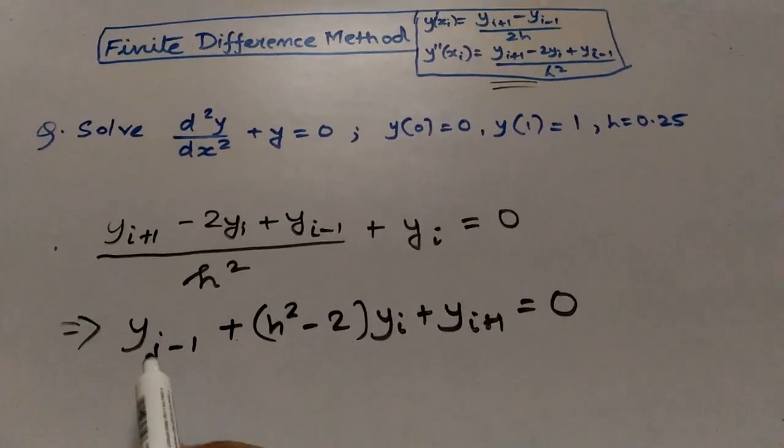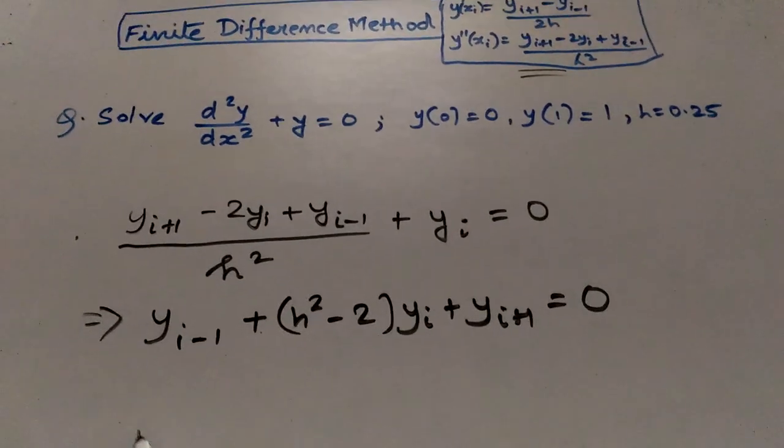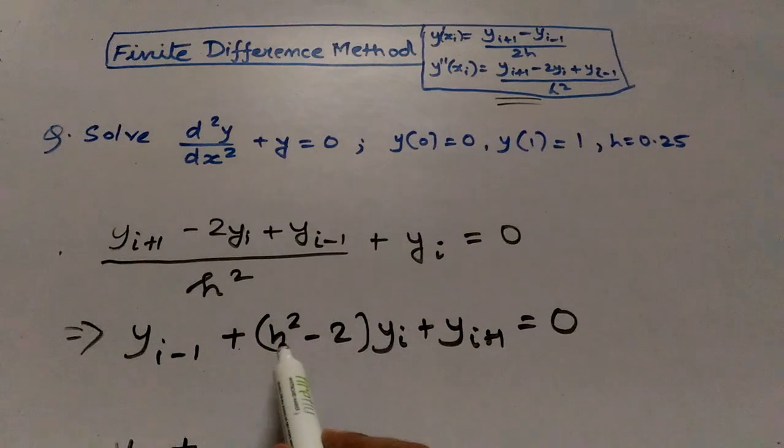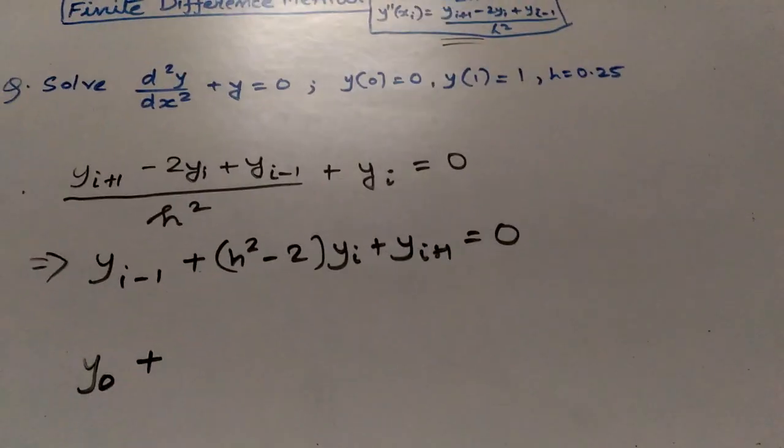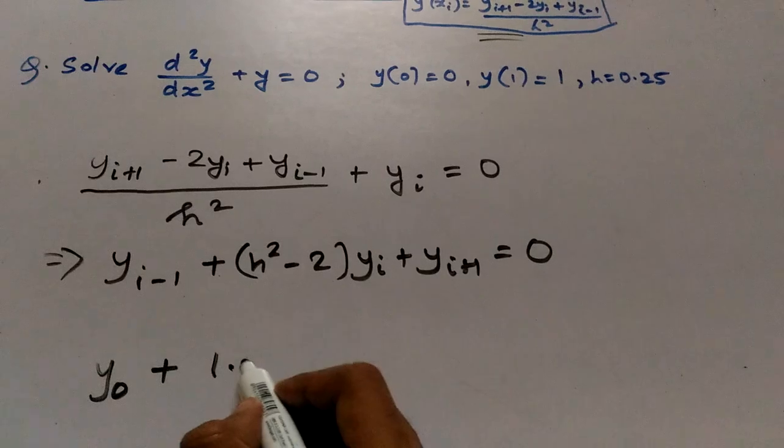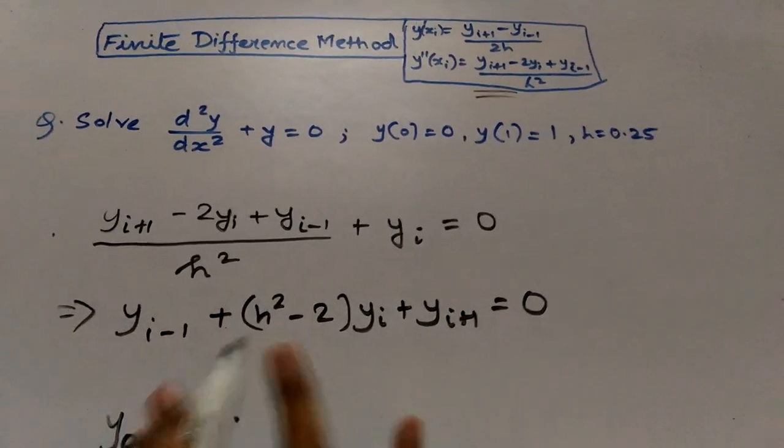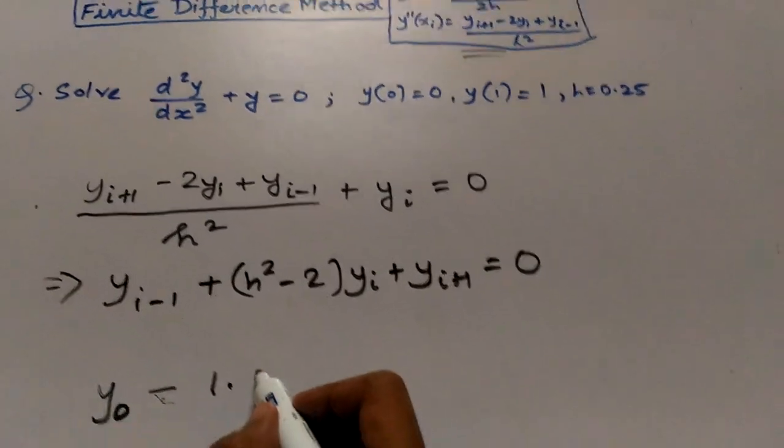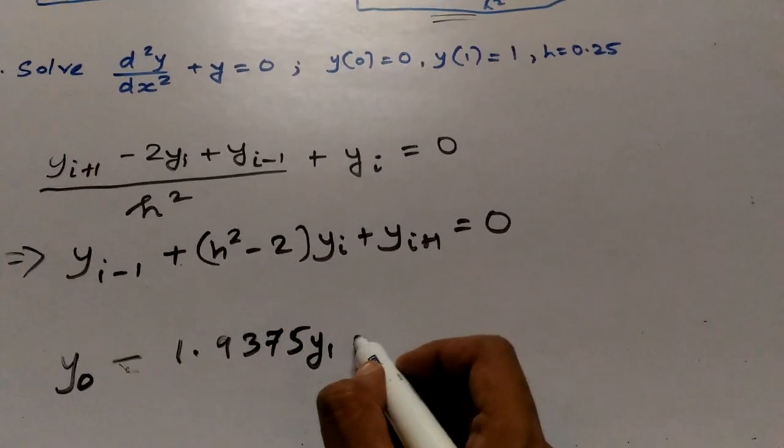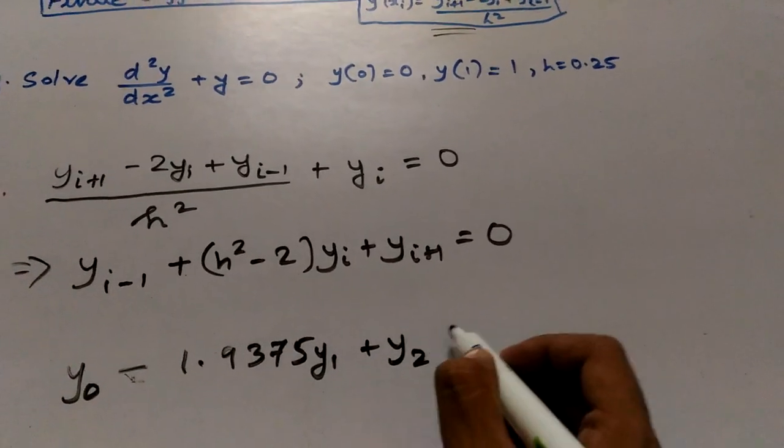So our y_{i-1} will be y_0. I will put the value of h here, so it will become h² that is 0.25² minus 2, which is minus 1.9375 y_1 plus y_2 equals 0.